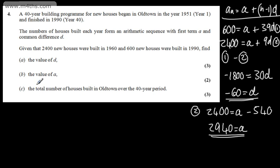In part C, for three marks, the total number of houses built in Old Town over the 40-year period. If we collect the information A, N, D, S, and L, we've got a couple of different choices. We know that the first term A is 2940, the number is 40, the common difference is negative 60. We want the sum of the first 40 terms, and we also have the last term. The last term is 600.